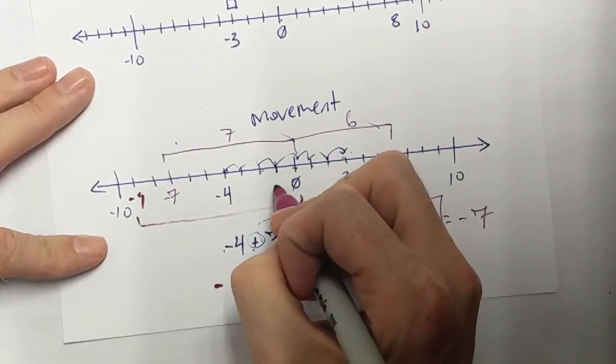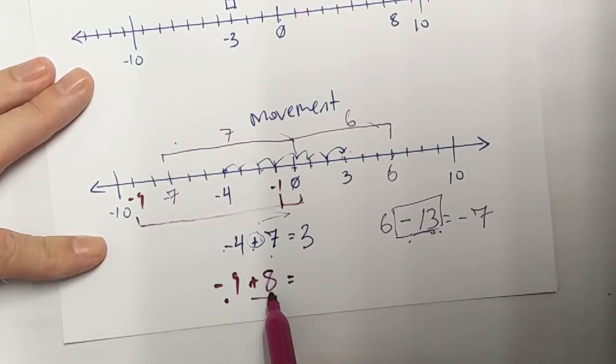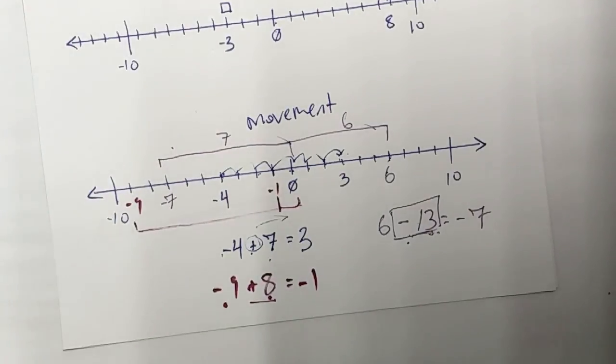So what's 1 less of 0? That is negative 1. I'm at negative 9. I move up 8. I'm going to end up at negative 1.